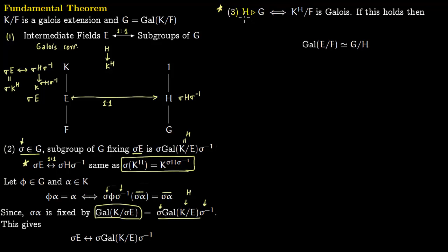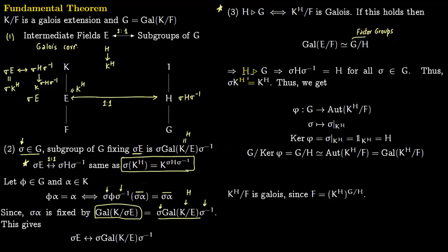Another property to prove: h is a normal subgroup of g if and only if the fixed field k^H over f is Galois. If this holds, then the Galois group of k^H over f is the factor group g/h. This is a powerful computational tool — the automorphisms of e which fix f is just g/h when h is normal. Working in the forward direction: given h is normal in g, by definition σHσ⁻¹ = h for all σ in g. Using our earlier result, σ(k^H) = k^(σHσ⁻¹) = k^H.